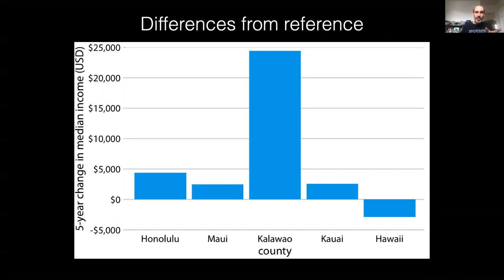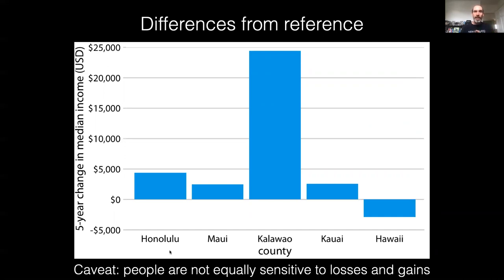Even though this doesn't violate the principle of proportional ink, it is really important to give a lot of thought when choosing reference groups, because people can be very sensitive to that choice. We'll dive into this at the end of the semester when we talk about decision analysis — people are really not equally sensitive to losses and gains.